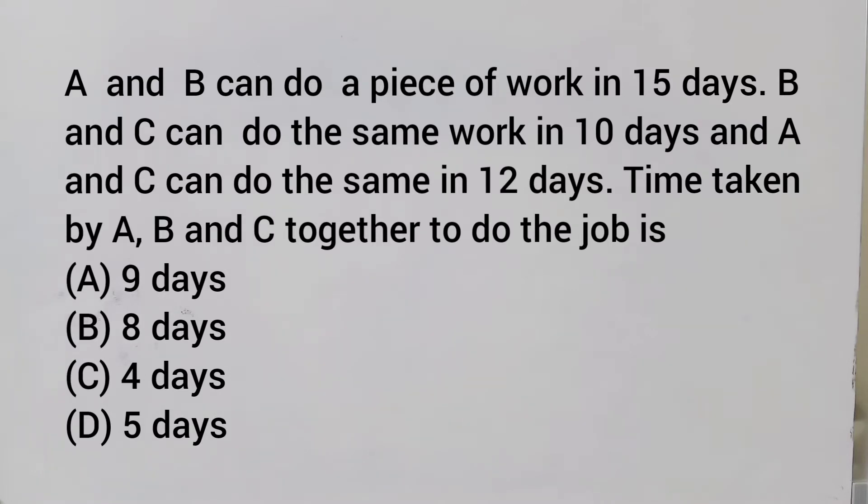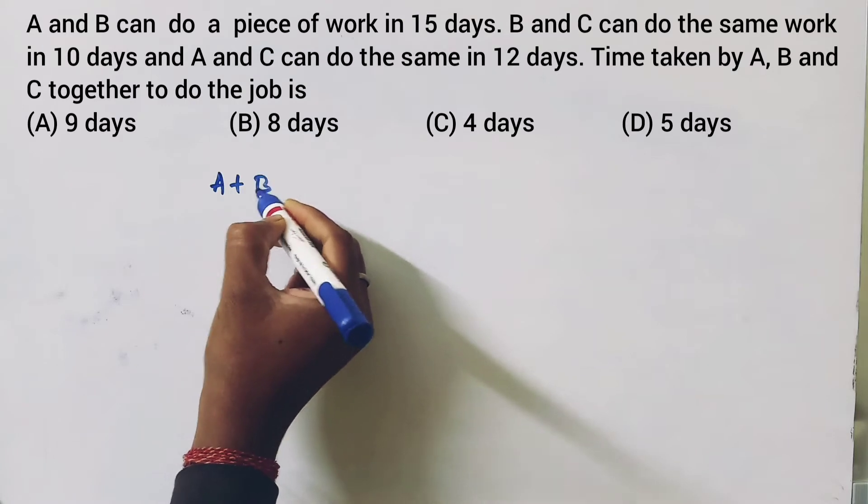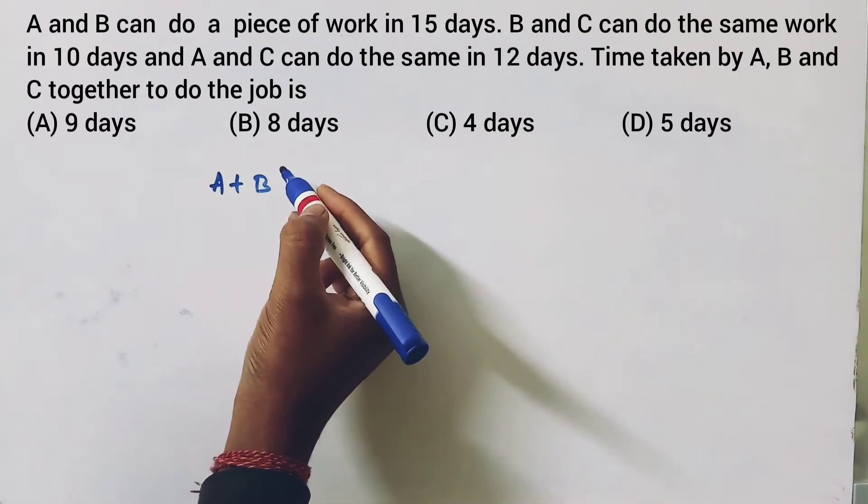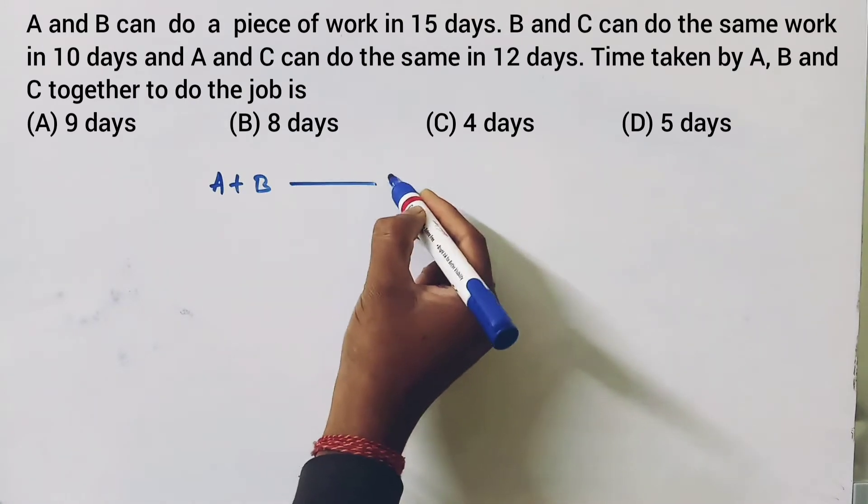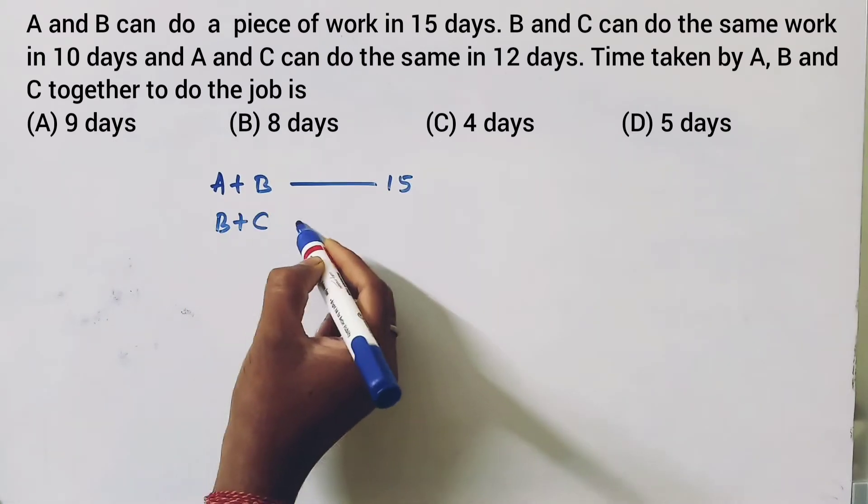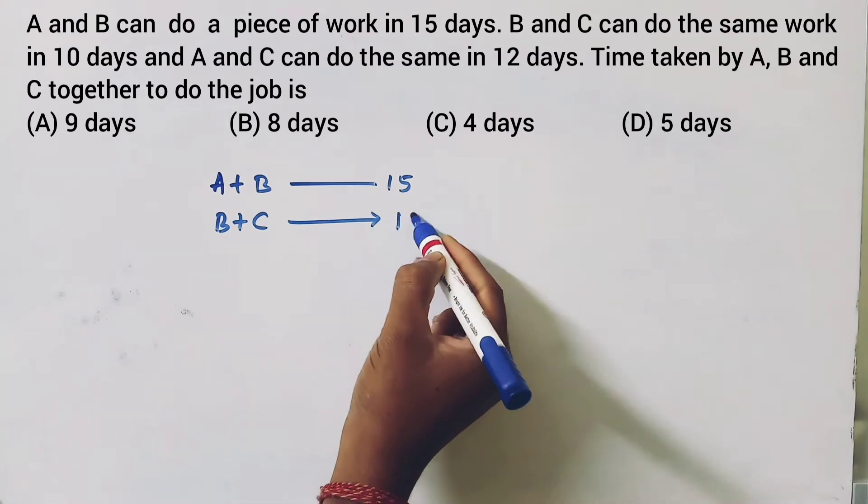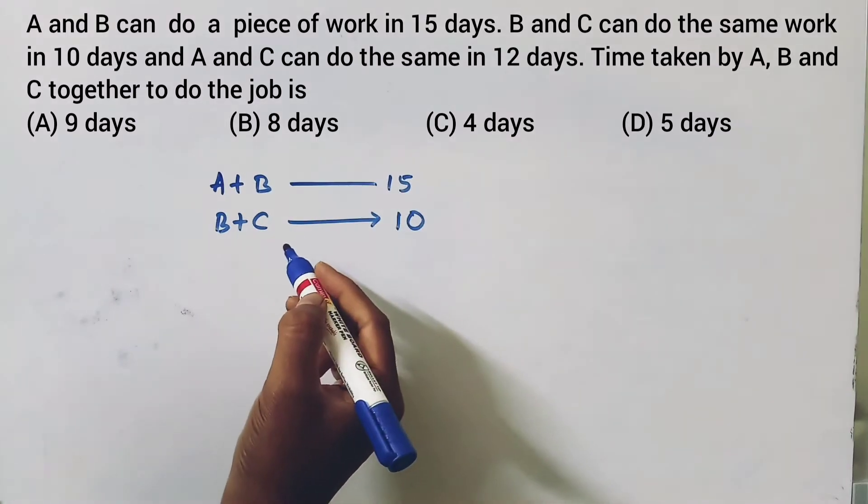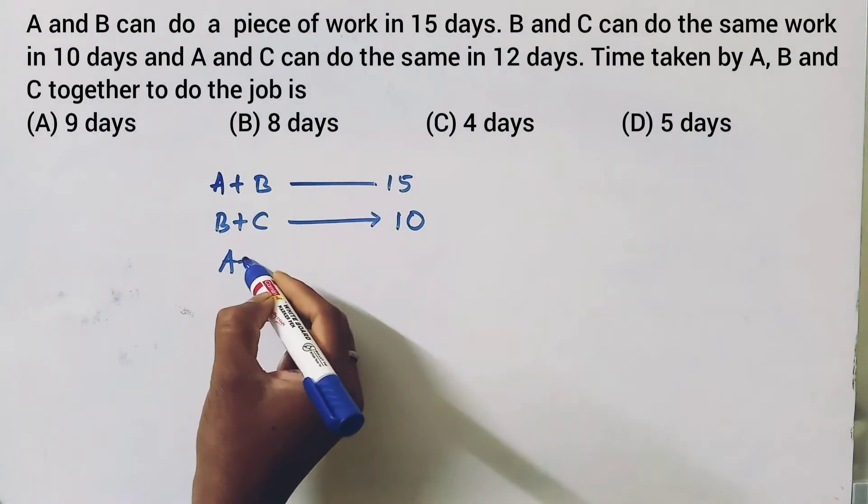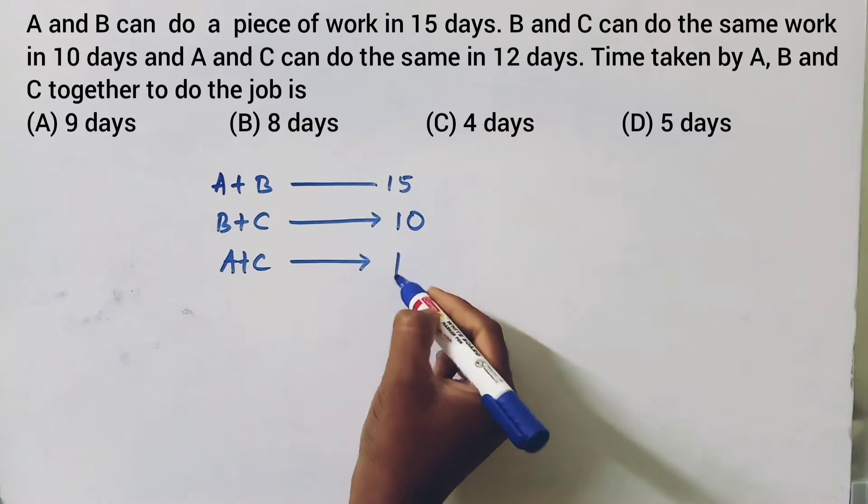Time taken by A, B and C together to do the job is? So A plus B can do the same work in 15 days, and B plus C can do the same work in 10 days, and A and C can do the same work in 12 days.